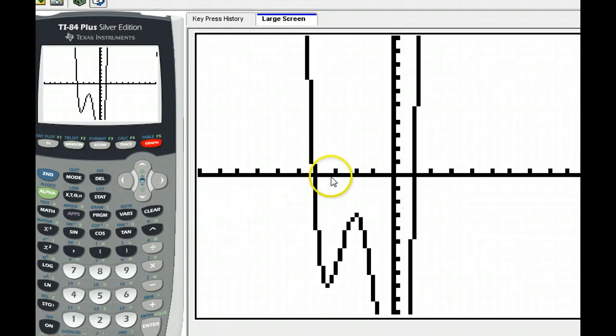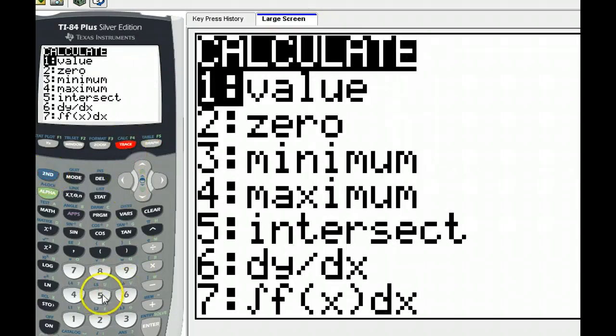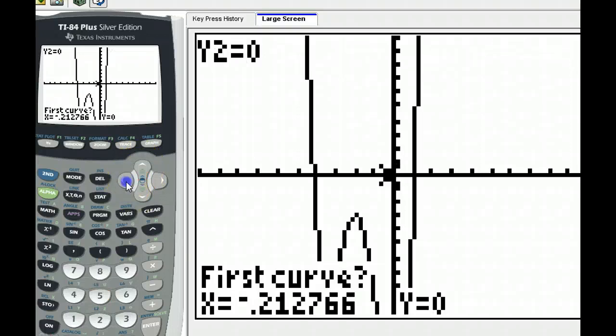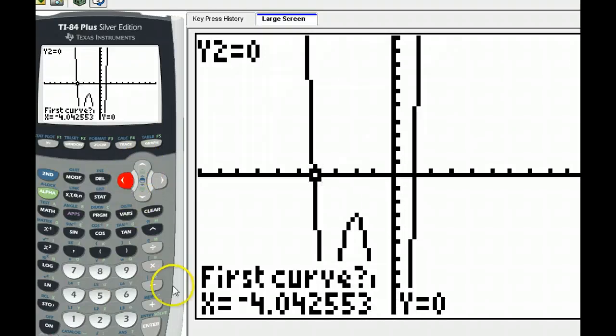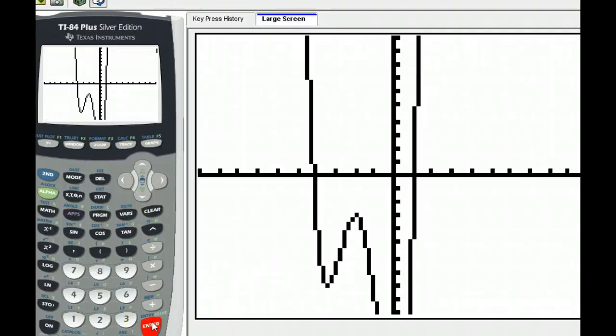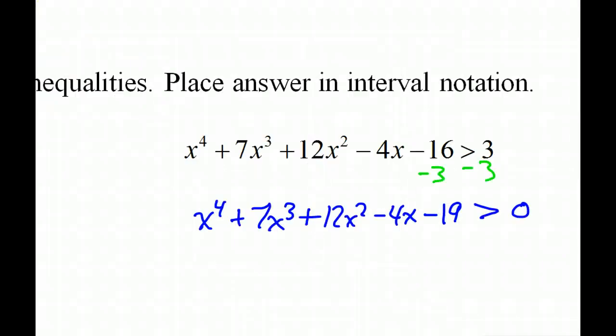Okay, so I'm seeing two possible zeros right here, so I'm going to hit second trace 5 for intersection. I'm going to hit my up arrow so I can get on the x-axis. I'm going to go over to the first one, and I'm going to hit enter, enter, enter. Okay, so negative 4.13 is my first one.